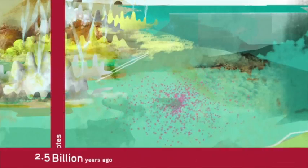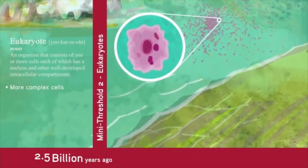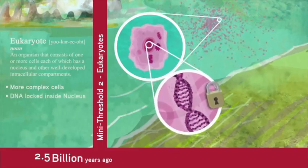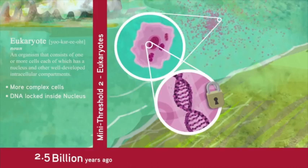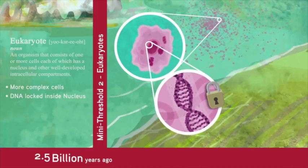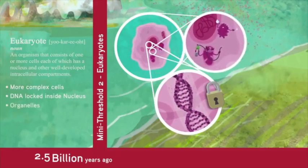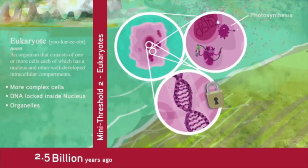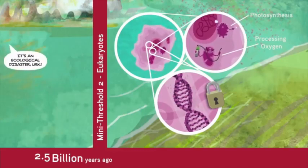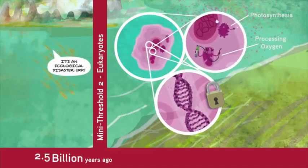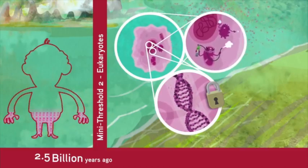Mini-threshold 2 is the emergence of eukaryotes about 2.5 billion years ago. These are more complex cells whose DNA is locked up inside a special case called the nucleus, which help protect and preserve vital genetic information. Eukaryotes also contain tiny organs called organelles. Like the organs in your body, they perform special functions such as photosynthesis or processing oxygen. This meant that eukaryotes could thrive in Earth's increasingly oxygen-rich atmosphere, while many prokaryotes perished. That's a pretty important development since we are made entirely of eukaryotic cells.